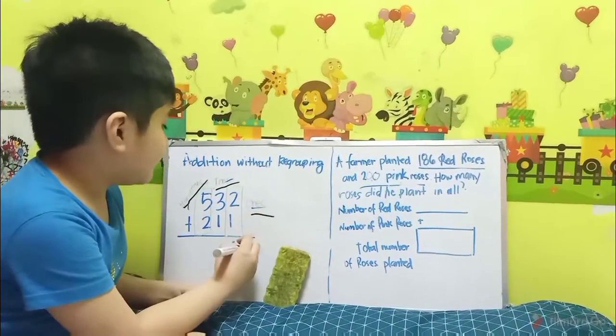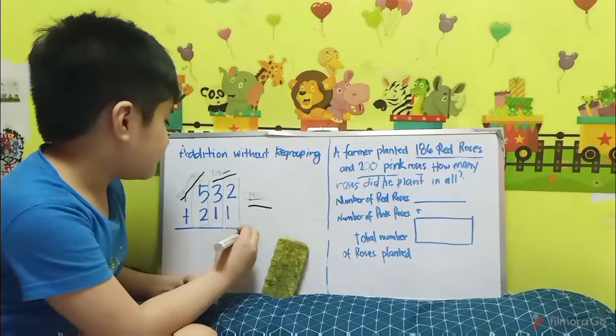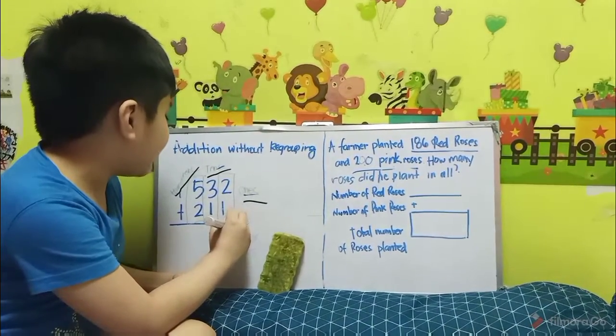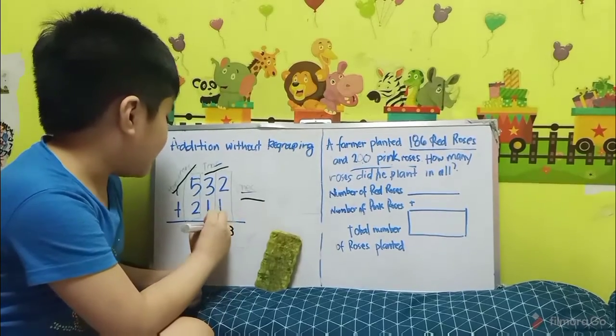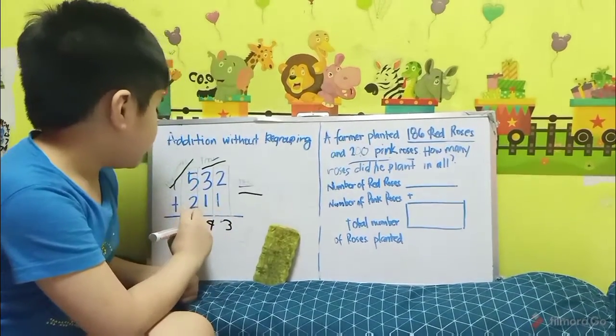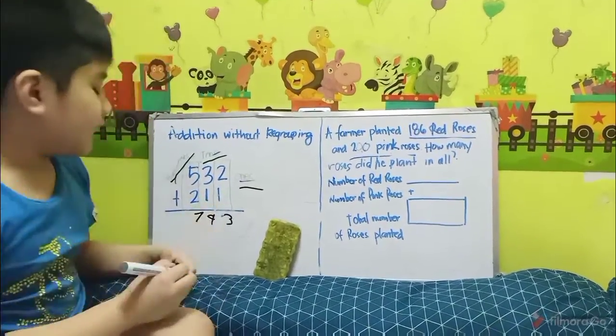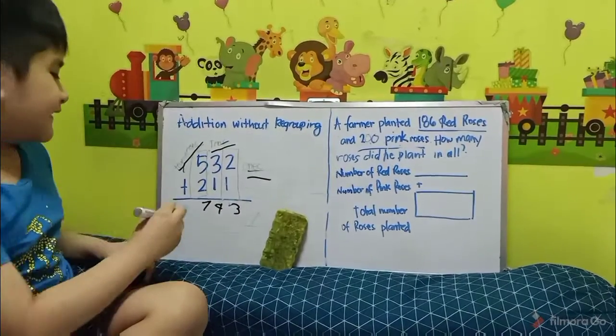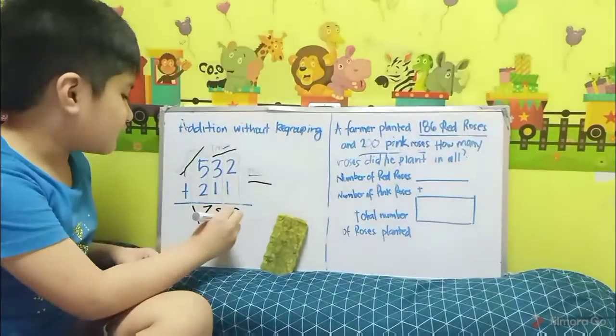First, I add in the ones. So, 2 plus 1 is 3, 3 plus 1 is 4, 5 plus 2 is 7. So, the sum is 743.